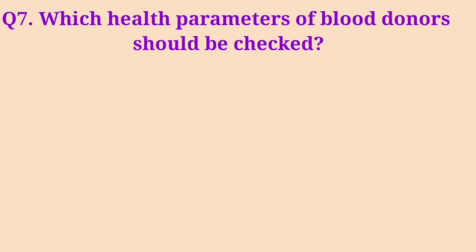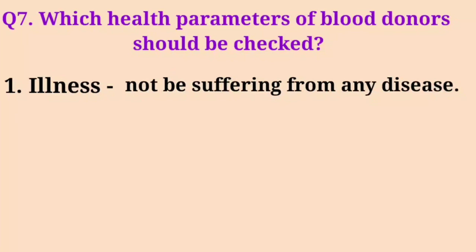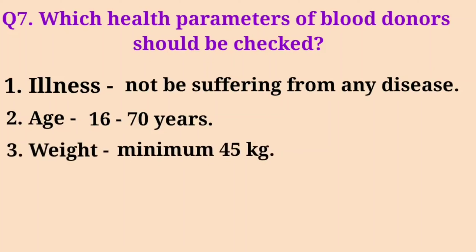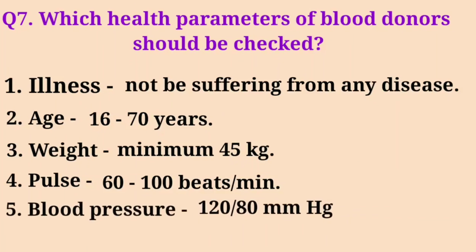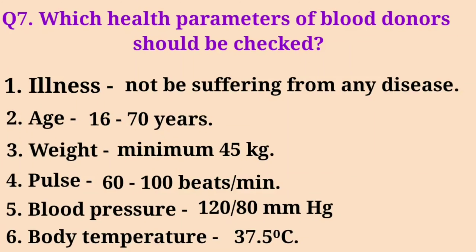Question 7 – Which health parameters of blood donors should be checked? Number 1 – Illness: the donor should not be suffering from any communicable disease. Number 2 – Age: the donor's age must be between 16 to 17 years. Number 3 – Weight: the donor's weight should be minimum 45 kg. Number 4 – Pulse: the pulse rate should be 60 to 100 beats per minute. Number 5 – Blood pressure: should be near normal at 120/80 mmHg. Number 6 – Body temperature: should not exceed 37.5 degrees Celsius.